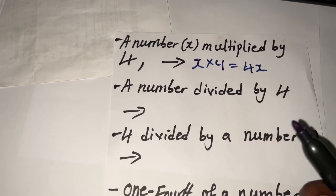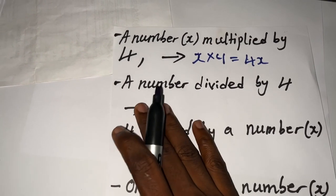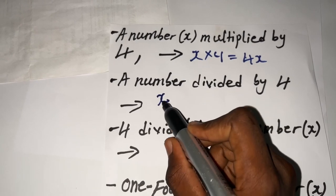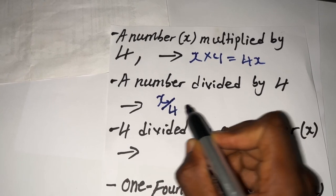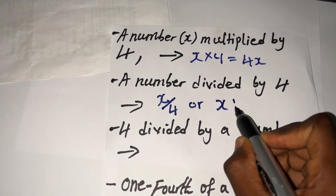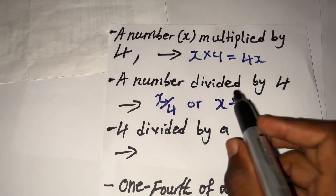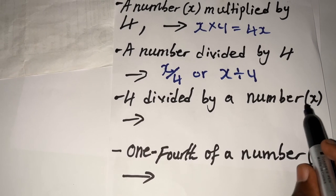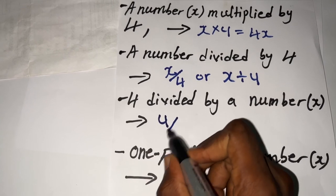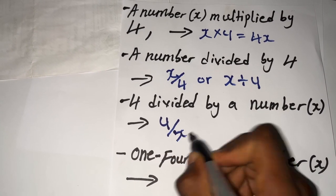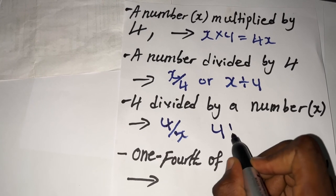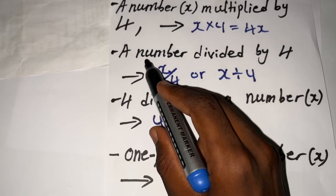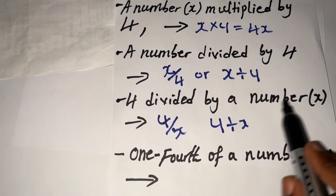For 'a number divided by 4,' the number comes first and then you write the division sign and then 4, giving x divided by 4. But there's another case: '4 divided by a number.' Here 4 comes first because 4 was stated first, so you write 4 divided by x. These two cases are different — 'a number divided by 4' gives x/4, while '4 divided by a number x' gives 4/x.